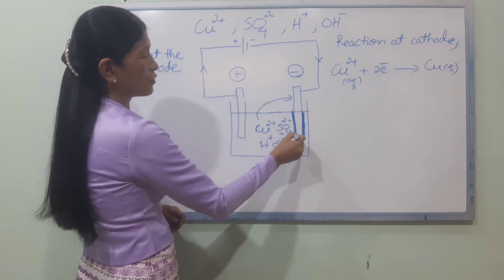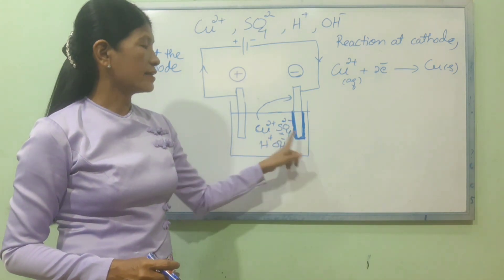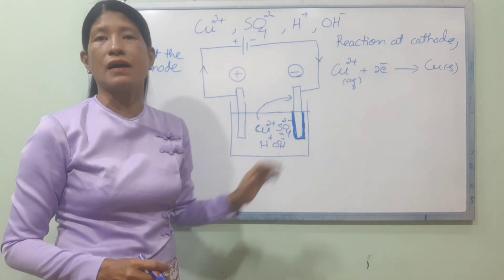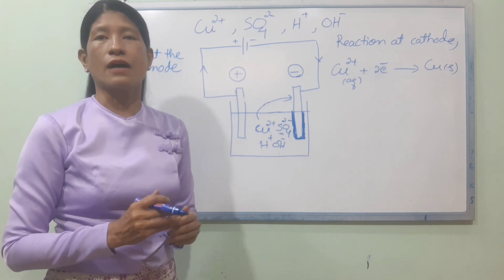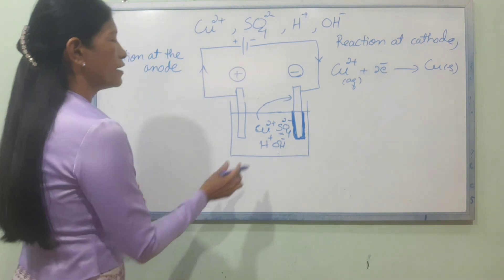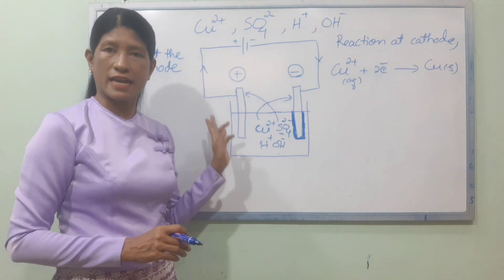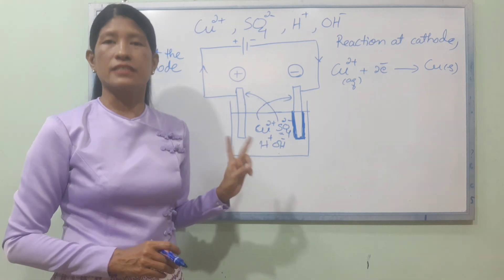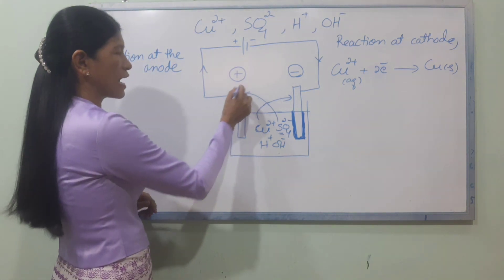The mass of the cathode increases. We can see the mass of the cathode increases. Cu2 minus — that is, SO4 2 minus and OH minus ions — are not discharged. Instead, other ions are discharged and the mass of the electrode increases.